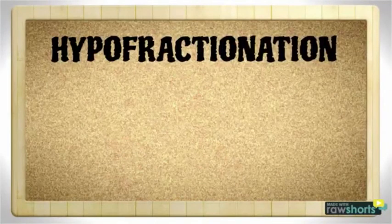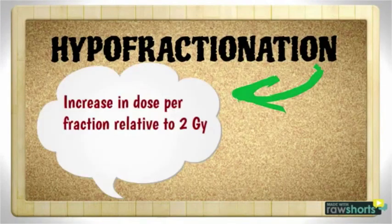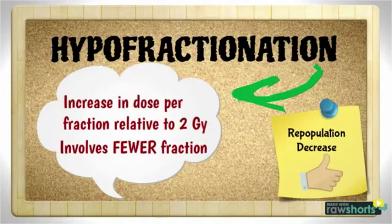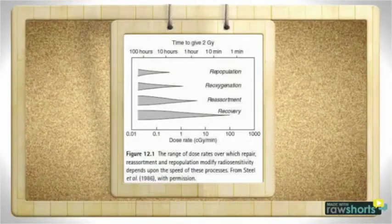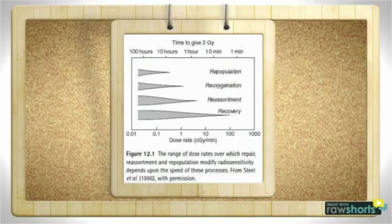Hypofractionation uses high dose per fraction and needs less fractionated treatment. Thus, cell repopulation decrease. The graph indicates that repopulation process is faster than the other. Low dose rate can make the repopulation to occur faster.